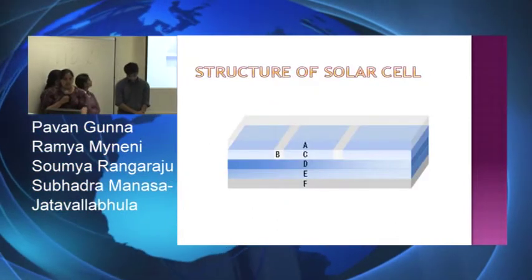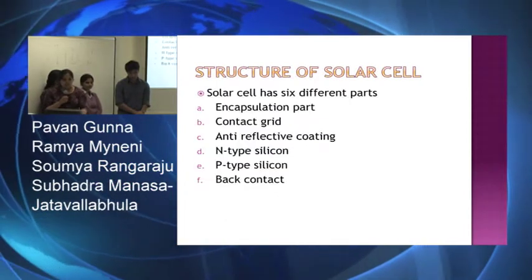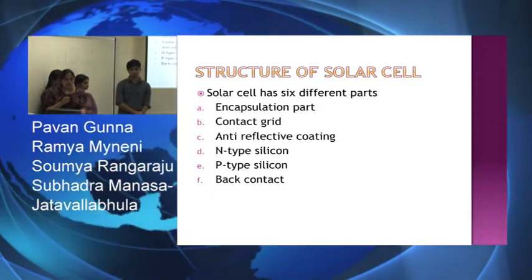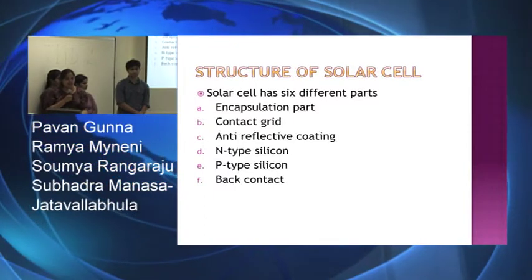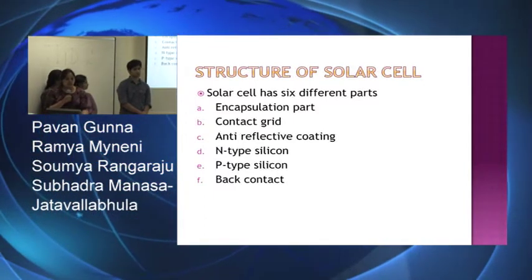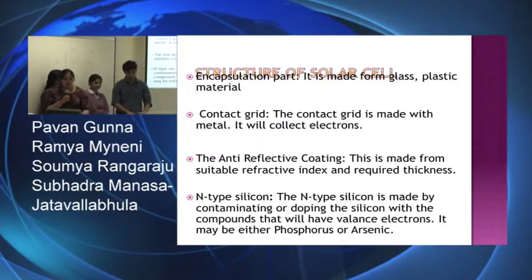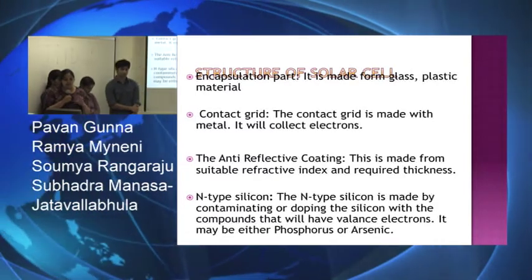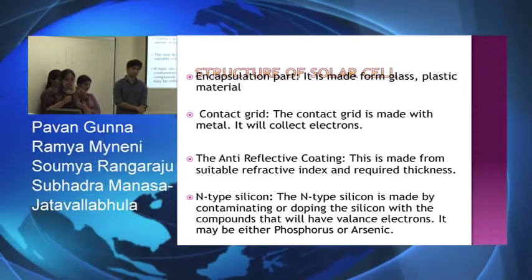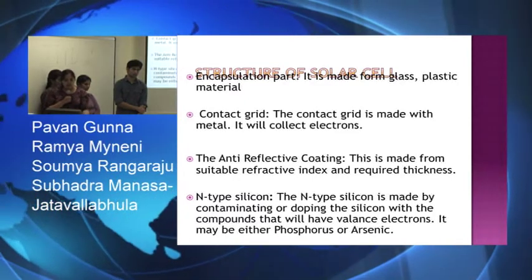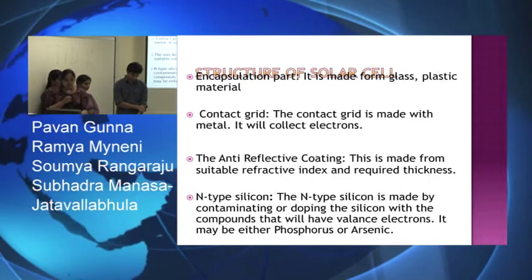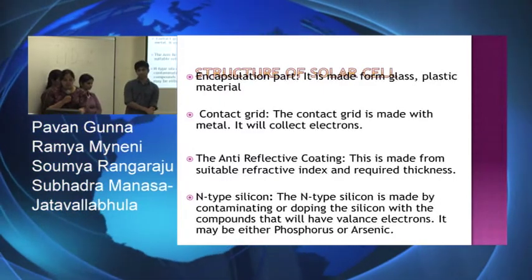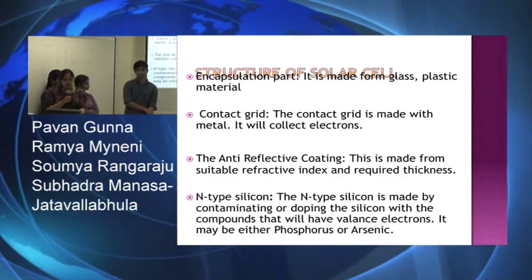Here is the structure of the solar cell and it has six different parts. The first one is the encapsulation part, made from sources like glass and plastic, and it acts like a cap for the entire solar cell. The second one is the contact grid, made with metal, and it collects the electrons. The third one is the anti-reflective coating, made with a suitable refractive index and thickness, and this layer helps the light to enter into the solar cell.